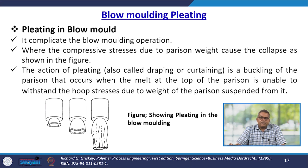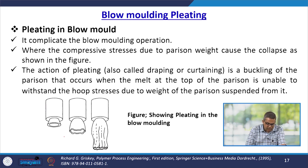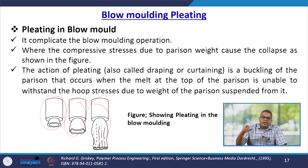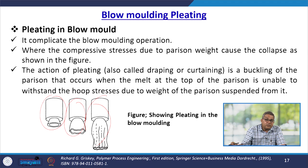Pleating into the blow mould complicates the blow moulding operation. Compressive stress due to the parison weight causes collapse. Pleating — also called draping or curtaining — is a buckling of the parison that occurs when the melt at the top cannot withstand the hoop stresses due to the weight of the suspended parison, while necking also occurs simultaneously.